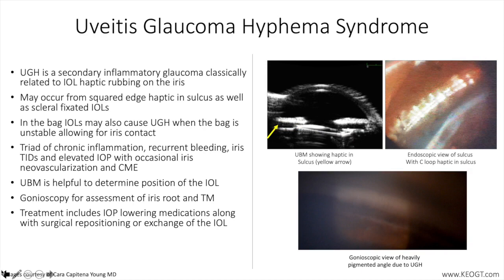Gonioscopy is also key to identify any neovascularization of the iris or the angle, which can be a feature of chronic UGH syndrome, but may also indicate presence of neovascular glaucoma, which can mimic UGH syndrome. Elevation in intraocular pressure can occur due to all factors noted above, with both physical plugging of the trabecular meshwork from pigment, blood, and inflammatory cells, as well as direct mechanical destruction of the trabecular meshwork from compression and or rubbing against IOL structures.